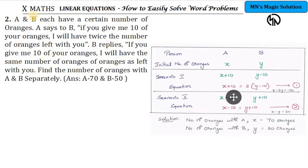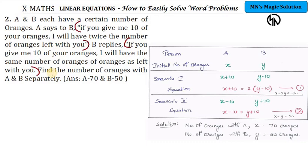Coming to the next question: A and B each have a certain number of oranges. A says to B, if you give me 10 of your oranges, I will have twice the number of oranges left with you. B replies, if you give me 10 of your oranges, I will have the same number of oranges as left with you. We need to find the number of oranges with A and B. Let A have X oranges and B have Y oranges.